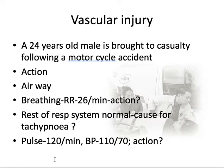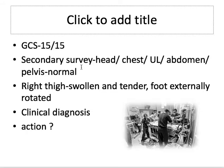On secondary survey from head to toe: chest re-examined with no evidence of bleeding, upper limbs normal, abdomen soft with no tenderness, pelvis normal with no tenderness. However, the right thigh was swollen and tender and the foot was externally rotated. The possible clinical diagnosis is a fracture of the femur. With a fracture femur you will need to immobilize, but it is very important to check the distal pulses.